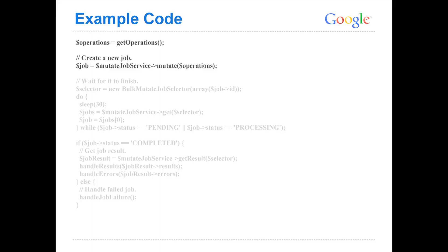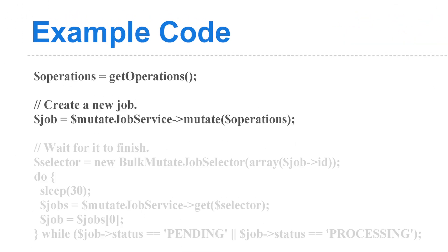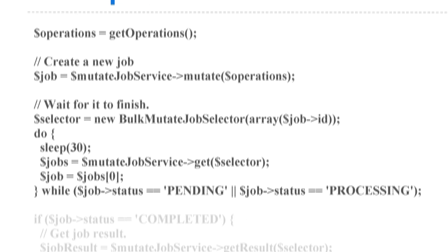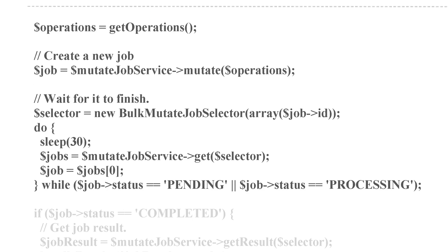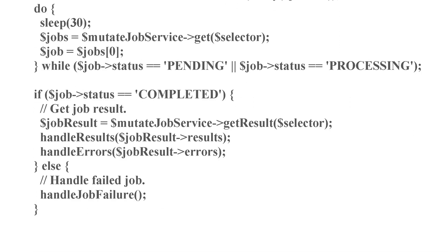To dive into example code — this is some PHP code — I've just created an array of operations. Your application will be somehow creating work that needs to be done against the API. So once you have that list of operations, you just call the Mutate method passing that list of operations. There's no extra wrapping that needs to go on. The next step is just waiting for that job to finish. You create a selector using the job ID that you got back when you called Mutate. Then in some sort of a loop — we recommend maybe every 30 seconds — just call the get using that selector to find out what the status of the job is. Once you've found that the job is completed, you can retrieve the results using getResult, passing that same selector that specifies the job ID. Then it's just a matter of handling the results and the errors that are returned.